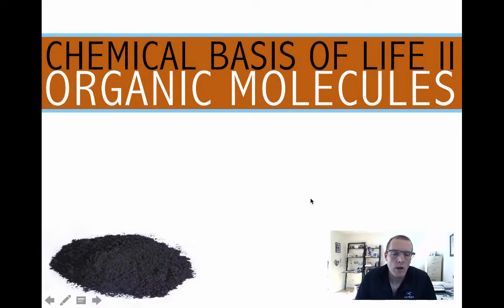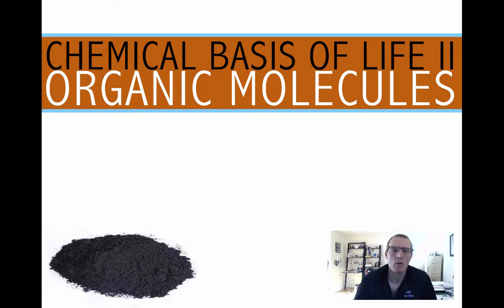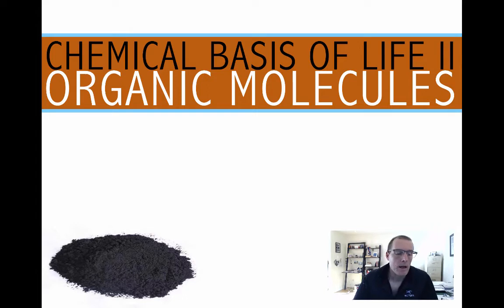Welcome back. Last time we looked at how we can join monomers together — monomers being things like simple sugars like glucose, or amino acids, or nucleotides — how we can join those molecules together to form complex organic polymers, and it's those organic polymers which are often used to construct cells. So what we'll look at today is the first of the major macromolecule groups, and that's carbohydrates.